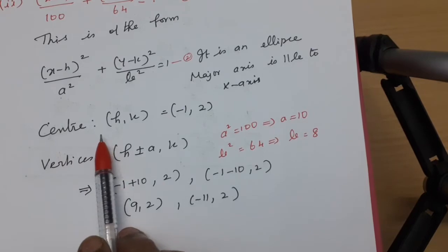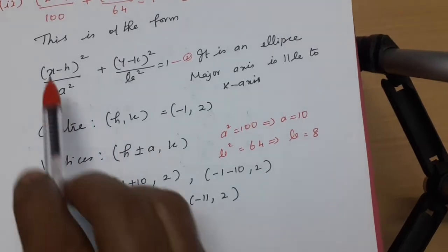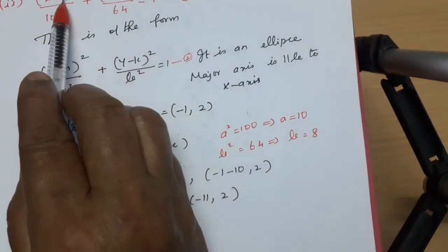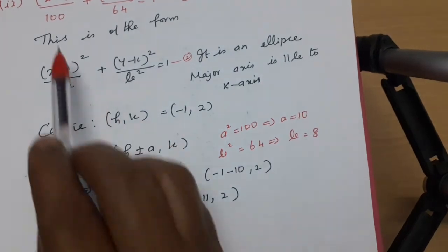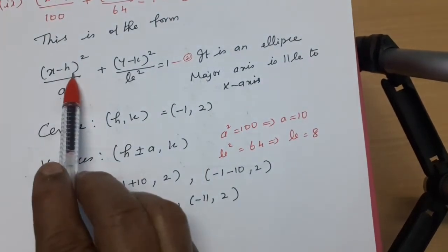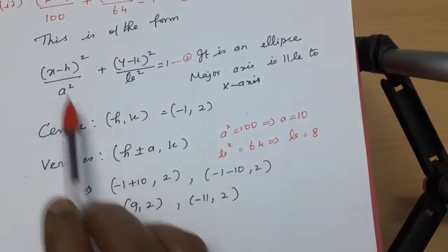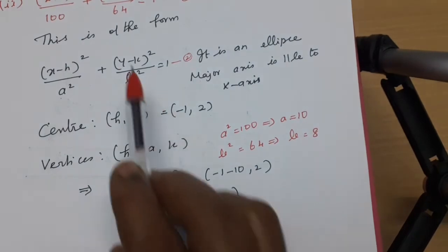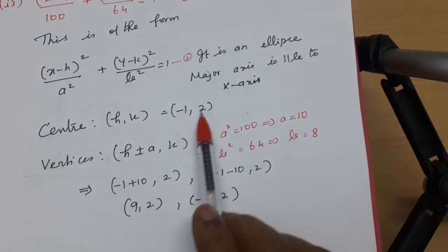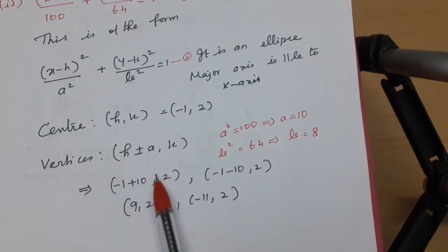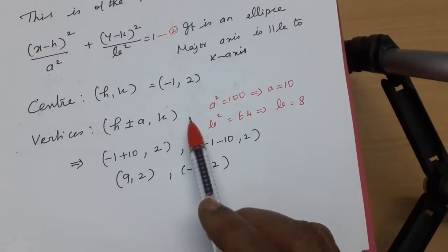The center is h comma k. Comparing x plus 1 with x minus h: minus h equals 1, so h equals minus 1. Comparing y minus 2 with y minus k: k equals 2. Therefore the center is (minus 1, 2).